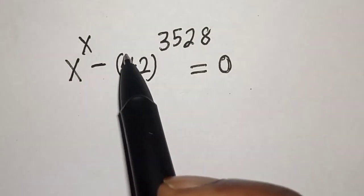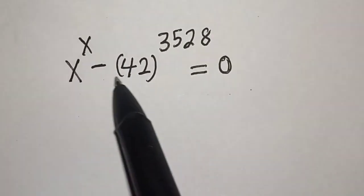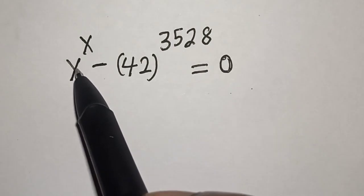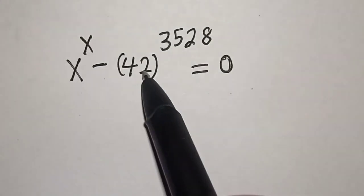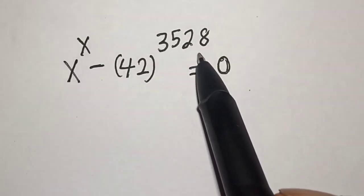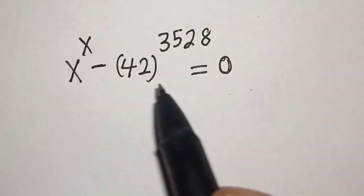Hello, welcome to Magist. In this class, we want to find the value of x from this equation: x raised to power x minus 42 raised to power 3528 is equal to 0.